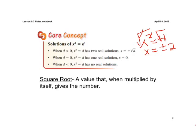Our second one, when d is 0, so when that number on the right side is 0, it just has one real solution, and that solution is 0. Because if we take the square root of 0, we're going to get 0. If we have x squared equals 0, well the only number we can square to get 0 is going to be 0. So we just have one solution.